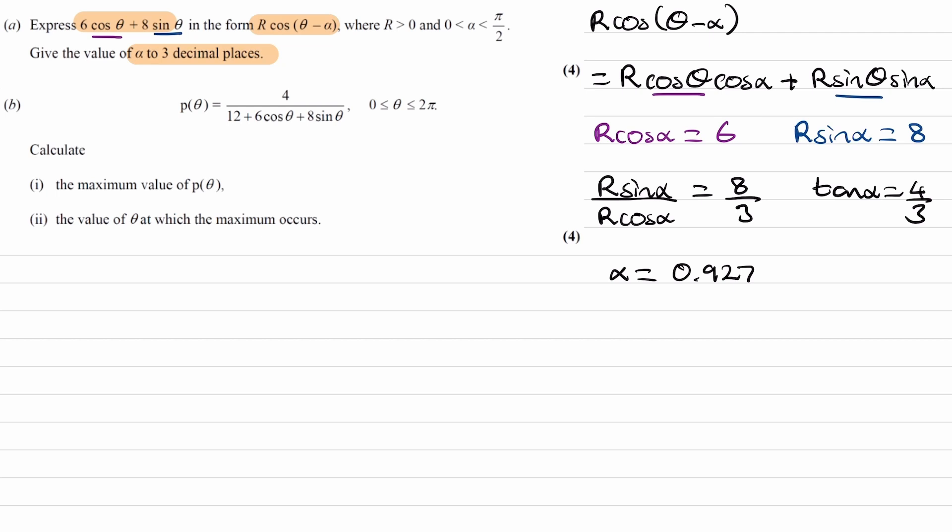And then to work out what r is, we do the square root of these two numbers squared and added, so 6 squared plus 8 squared, and that gives us 10. So that means, for part A, 6 cos theta plus 8 sin theta is equal to 10 cos theta minus alpha, where alpha is 0.927.